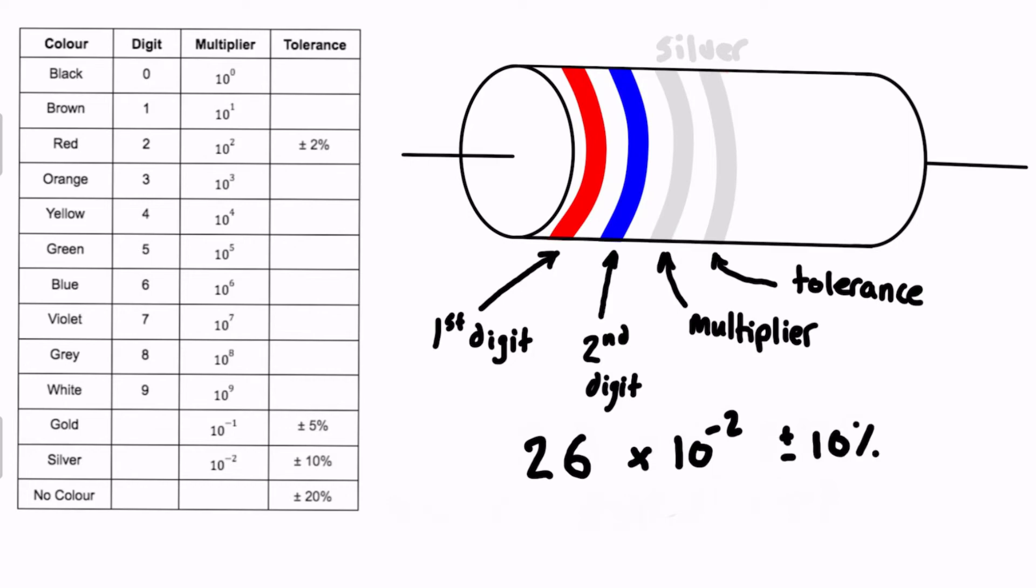So 26 times 10 to the minus 2, we just move that decimal place two points over, and we're going to get, we can just rewrite this as 0.26, and the units are, in fact, ohms, plus or minus 10 percent, and so that would be the answer if you're looking for the resistance of this resistor based on these color codes.